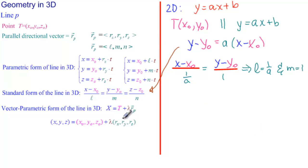So now we can make the parametric form of the line using this set of equations and the vector parametric form. So let's do the parametric form in 2D would be, we only have two equations, x equal to x0 plus l is 1 over a, so 1 over a times t.